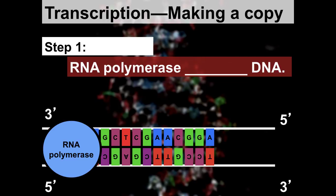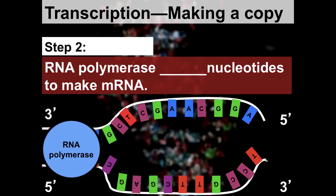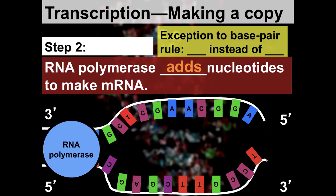In step one of transcription, instead of DNA polymerase like in DNA replication, we have RNA polymerase. RNA polymerase comes along, unwinds the DNA, and then in step two, adds nucleotides to make a messenger RNA strand — just like DNA polymerase added nucleotides to make a new strand of DNA.